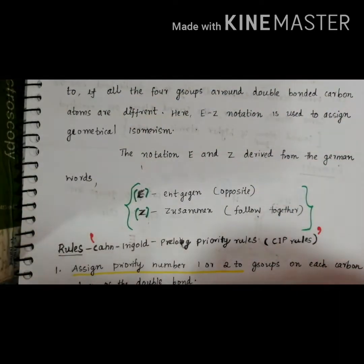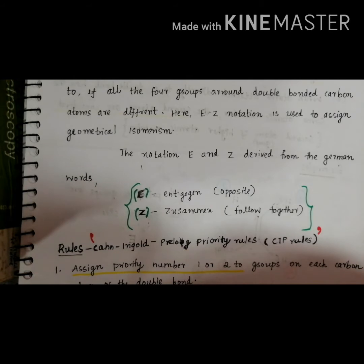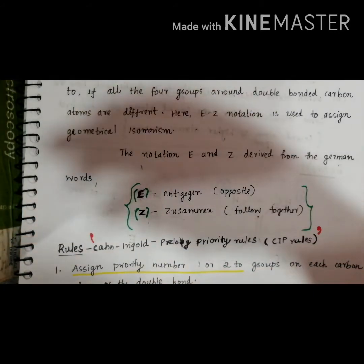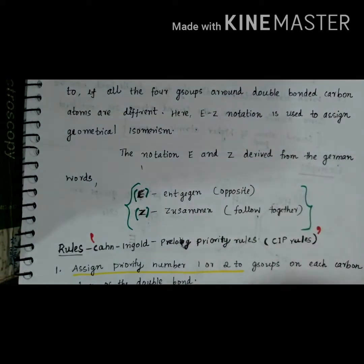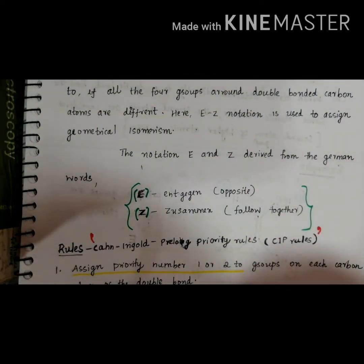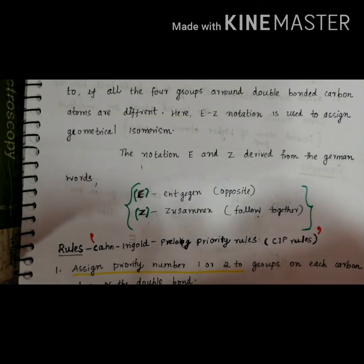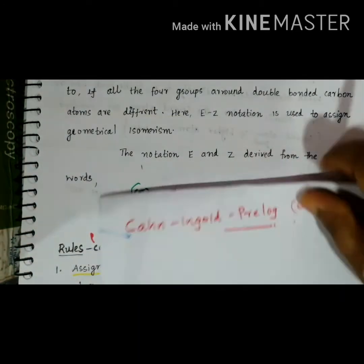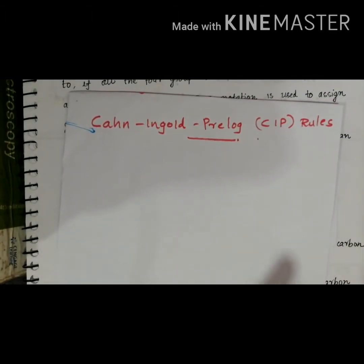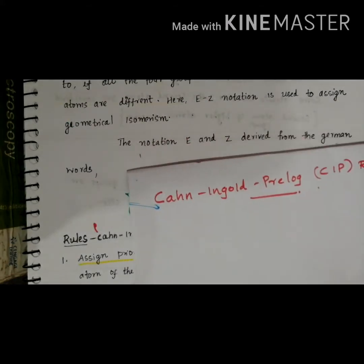What do E and Z mean? 'Entgegen' is a German word representing opposite side, and 'Zusammen' represents same side or together. Both are written in italic mode and presented within brackets. To assign E and Z notation, we need some rules generally called Cahn-Ingold-Prelog rules, or CIP rules. These rules define how we assign E and Z notation to a compound to describe its stereochemistry.